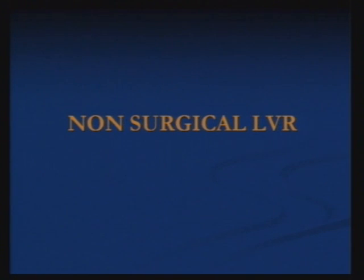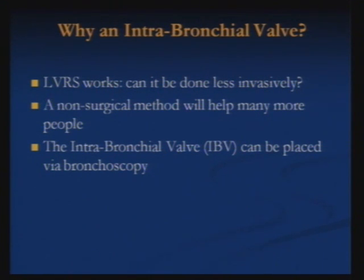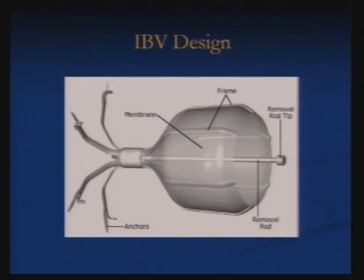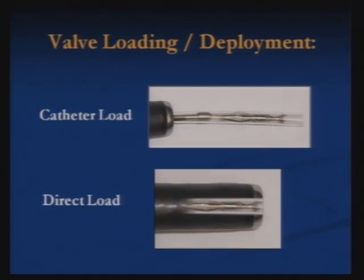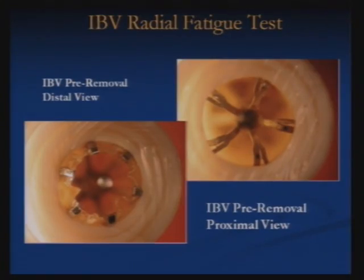A new modality is non-surgical lung volume reduction. It is less invasive and can help more people. An intrabronchial valve placed via bronchoscopy is used. Several designs have been developed; one is routinely used with experimental use starting in certain centers. The loading device can be loaded by two ways — a catheter load and a direct load — and the diagram shows the pre-removable distal and proximal views of the valve.